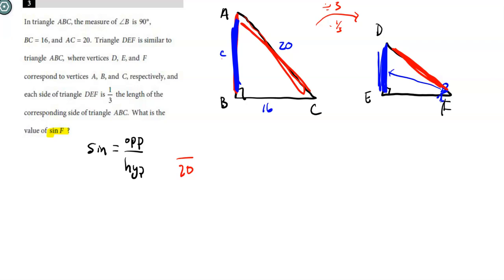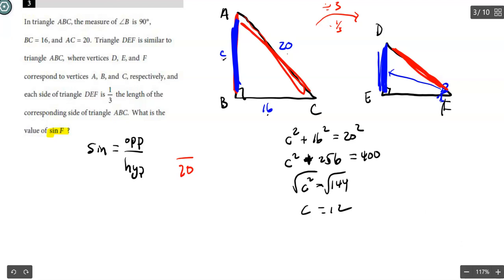There's two ways to do it. You could use the Pythagorean theorem. You could say leg squared, leg squared, hypotenuse squared. So c squared plus 16 squared equals 20 squared. c squared plus 256 equals 400. Minus that from both sides, you'll get c squared equals 144. Take the square root of both sides and you'll get c equals 12.